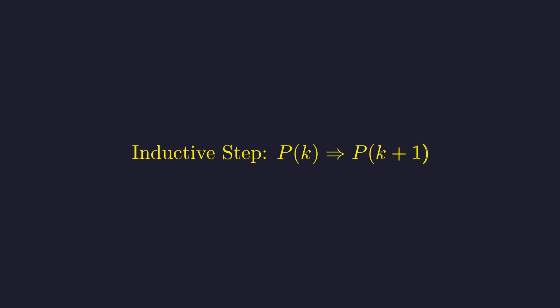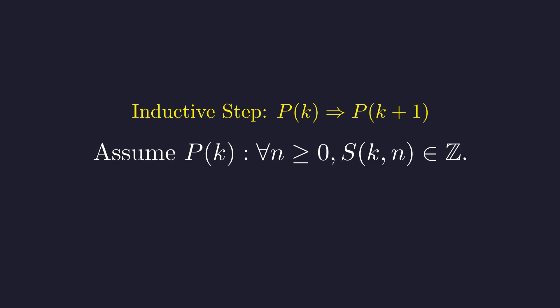Now for the inductive step. We assume our statement is true for some value k, and we'll use that to prove it's true for k plus 1. Our inductive hypothesis is that for some fixed value k, our expression gives an integer for every possible value of n. In other words, the entire kth row consists of integers.